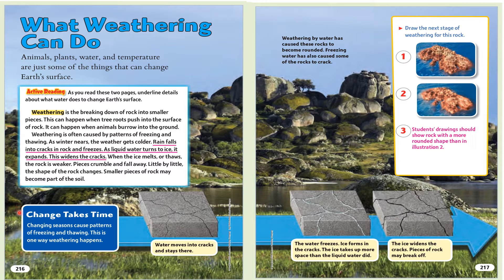Change takes time. Changing seasons cause patterns of freezing and thawing — this is one way weathering happens. Water moves into cracks and stays there. Weathering by water has caused these rocks to become rounded. Freezing water has also caused some rocks to crack. The water freezes, ice forms in the cracks, and the ice takes up more space than the liquid water did, widening the cracks. Pieces of rock may break off. Draw the next stage of weathering for this rock.